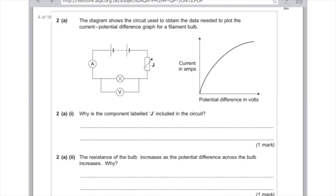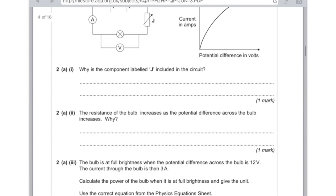Why is the component labeled J included in the circuit? Make sure you read that question properly. Don't go naming it—it wants to know why it's there. It's so you can obtain a range of voltages, or you could say to alter the resistance of the circuit by increasing or decreasing it. The resistance of the bulb increases as the potential difference across the bulb increases. Why?